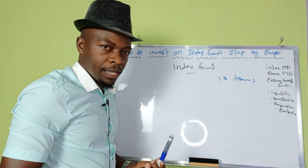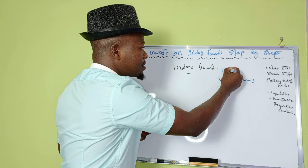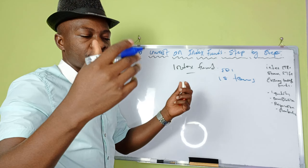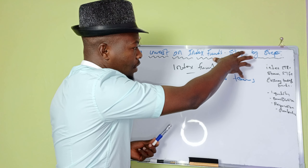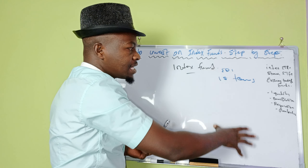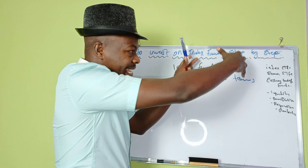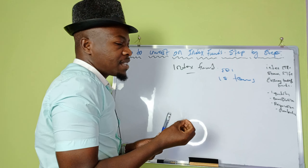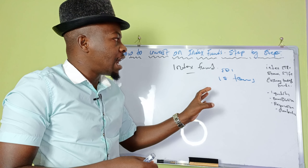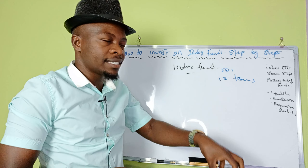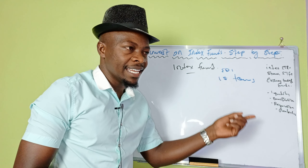Different companies are put together, and the investment product that tracks the performance of this index is called the Exchange Traded Fund. So when you buy an ETF, in real sense you are buying the index fund instead of a single company. Let me use a football example to explain my point more clearly for those who understand football.